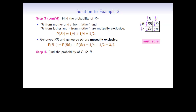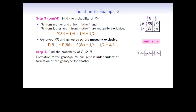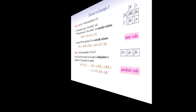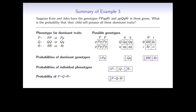Now we can finally put all this together to answer the final question: what is the probability that the child will possess all three dominant traits? We worked through three completely separate steps to find the three different probabilities. The formation of the genotype for one gene is independent of the other genes, so we use the product rule. Multiplying the three probabilities: 1 times a half times three quarters gives us three eighths. And this is the final answer.